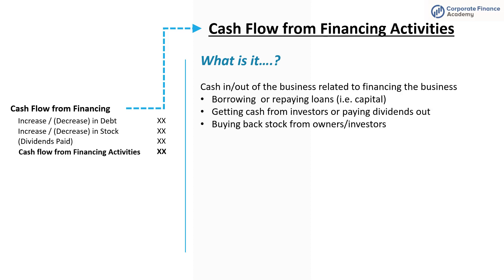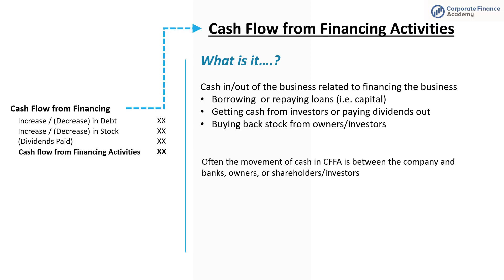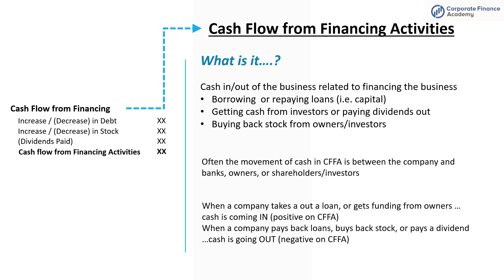Cash flow from financing activities is related to financing the business. This includes borrowing or repaying loans, getting capital from a bank, getting cash from investors, paying dividends to investors, or stock buybacks — public companies often do stock buybacks and this is a financing activity. The movement of cash in financing activities is typically between a company and a bank, owner, or shareholder. When a company takes out a loan or gets funding from its owners, that's cash coming in. When a company pays back loans, buys back stock, or pays a dividend, that's cash going out — a negative on cash flow from financing activities.